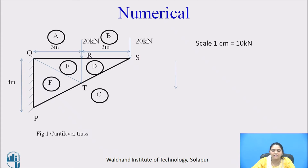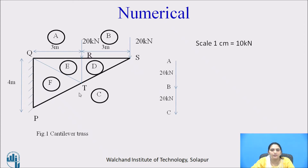This is a vertical line; as it is a vector diagram, the direction of the force is important — it is vertically downward, in between space A and space B. Now from B to C, there is also a force of 20 kilonewtons vertically downward, so again draw a 2 centimeter line vertically downward. All the external forces have now been shown. As we are skipping the support reaction calculation, we stop here.